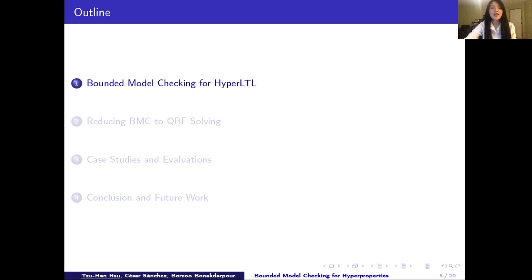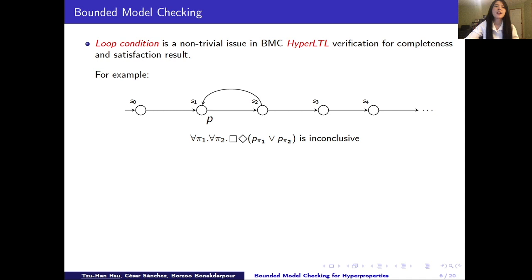So first, in bounded model checking, loop condition is very important for completeness. Loop condition is also the reason why verifying hyperLTL using bounded model checking is a challenging problem. For example, consider this structure on the slide. If we want to check a hyperLTL formula in the form of for all for all, we need to check through all possible pairs of traces and their relationship in order to draw a correct conclusion.